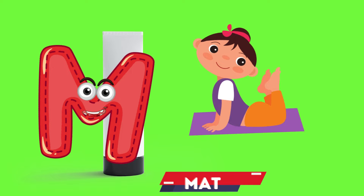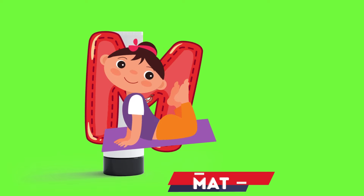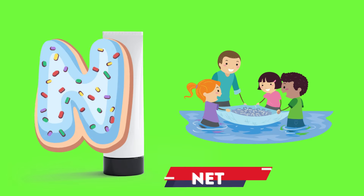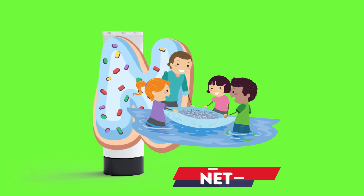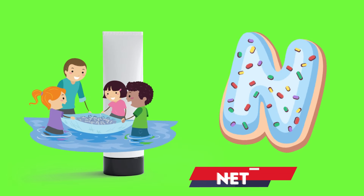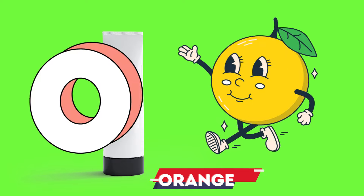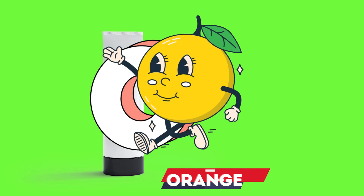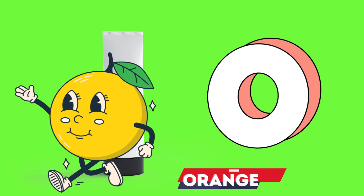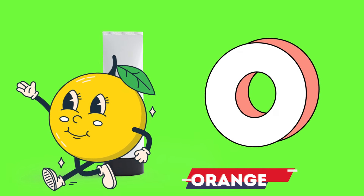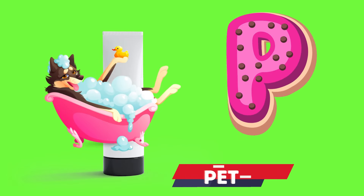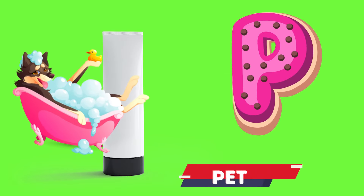M is for mat, m-m-mat. N is for net, n-n-net. O is for orange, o-o-orange. P is for pet, p-p-pet.